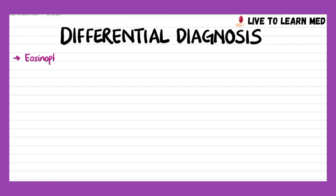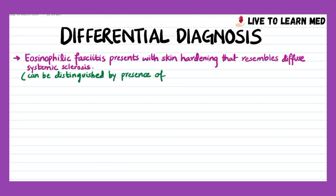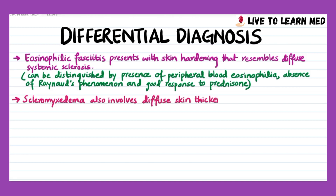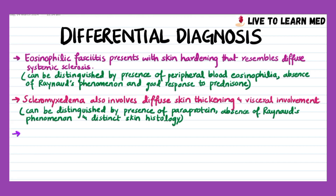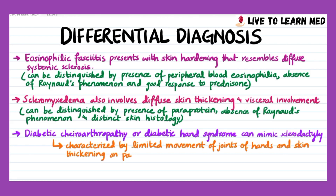Early in its course, systemic sclerosis can cause diagnostic confusion with other autoimmune diseases. Differentials include eosinophilic fasciitis, which presents with skin hardening resembling diffuse systemic sclerosis but is distinguished by peripheral blood eosinophilia, absence of Raynaud's phenomenon, and good response to prednisone. Scleromyxedema involves diffuse skin thickening and visceral involvement but is distinguished by presence of a paraprotein, absence of Raynaud's phenomenon, and distinct skin histology. Diabetic chiroarthropathy, or diabetic hand syndrome, can mimic sclerodactyly and is characterized by limited joint movement of the hands and thickening of skin on palmar and dorsal surfaces in long-standing uncontrolled diabetes.